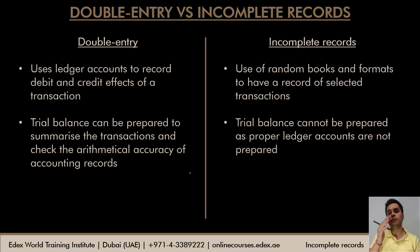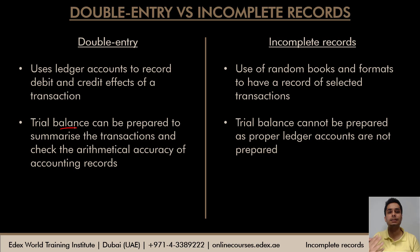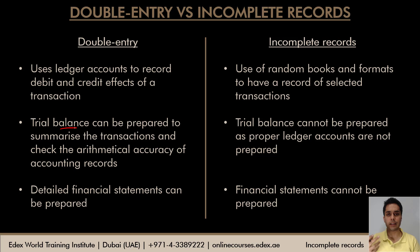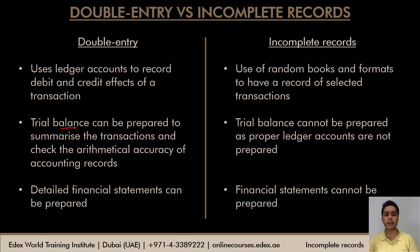When you maintain proper double entry bookkeeping and ledger accounts, you can prepare a trial balance at the end to summarize transactions, and if the trial balance doesn't match it gives you a hint that an error has been made. But with incomplete records you cannot prepare a trial balance, so there is no system to check the arithmetical accuracy of the records. In double entry you can prepare detailed financial statements — an income statement for profit or loss and a balance sheet for the financial position — whereas with incomplete records detailed financial statements cannot be prepared, though profit can still be calculated.